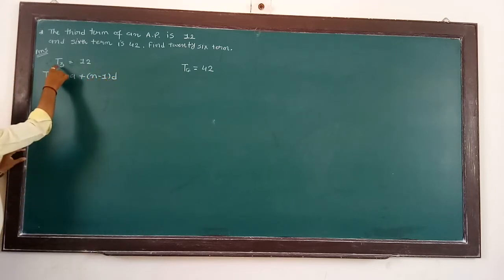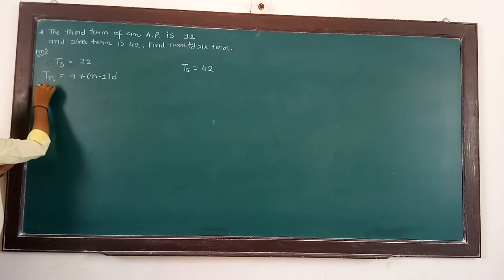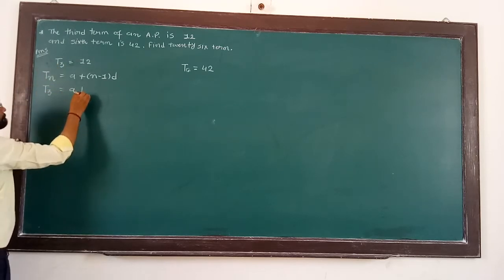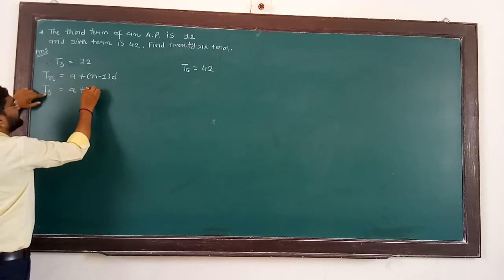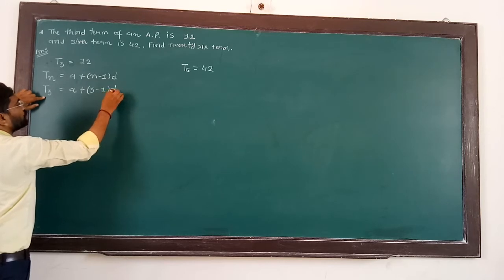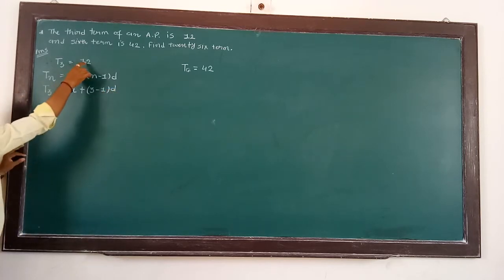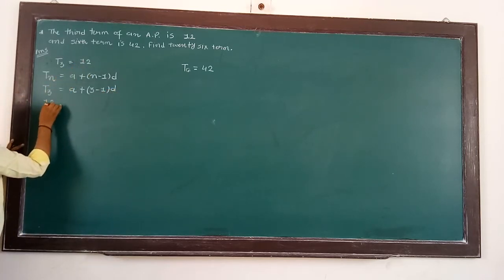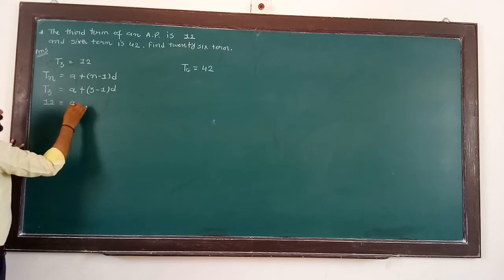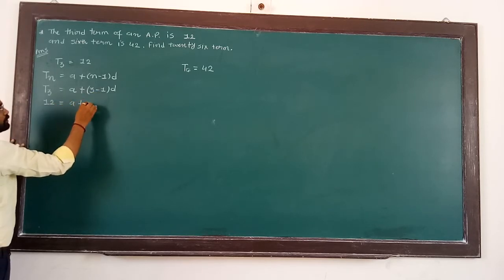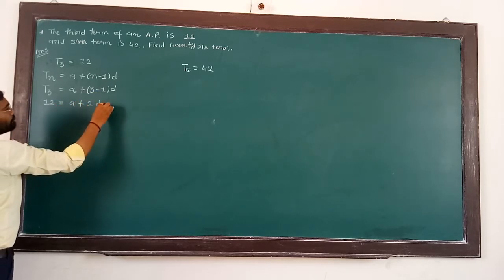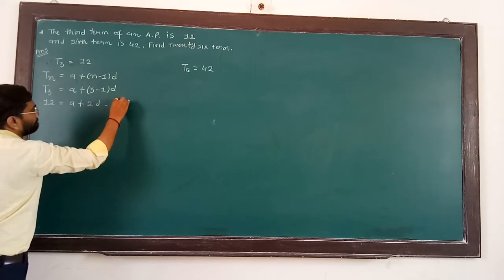Tn means T3. A is not given, N is given, 3 minus 1, and D is not given. T3 is equal to 12, so we write here T3 is 12. A plus 3 minus 1 means 2, D. Equation number 1.